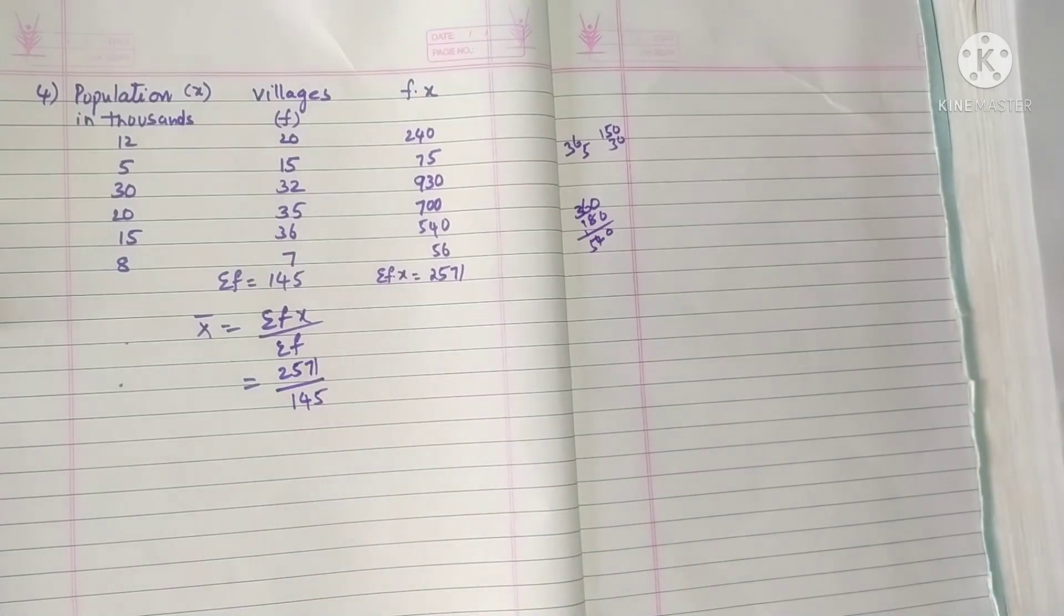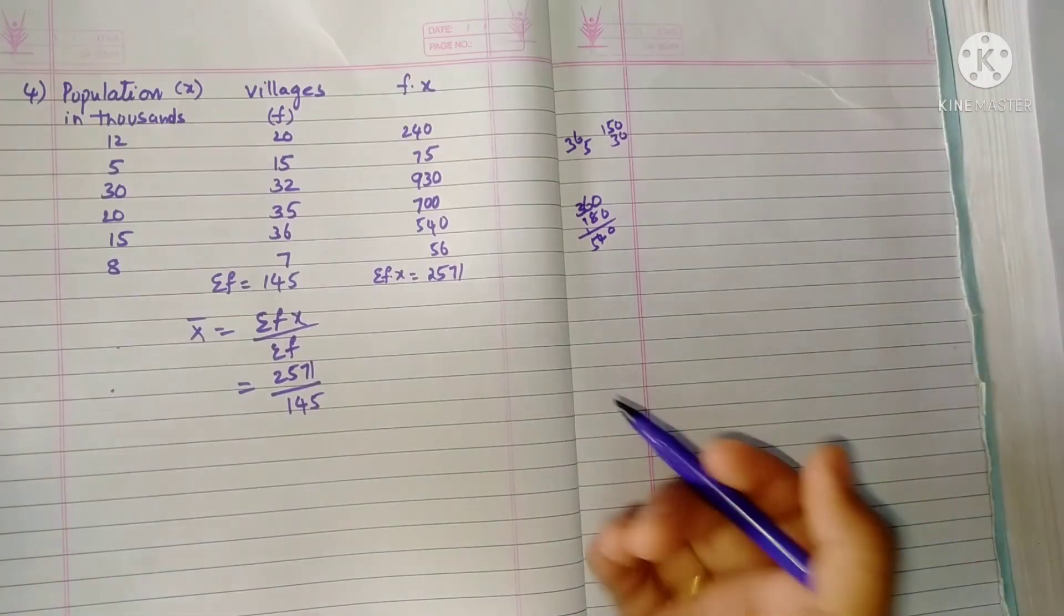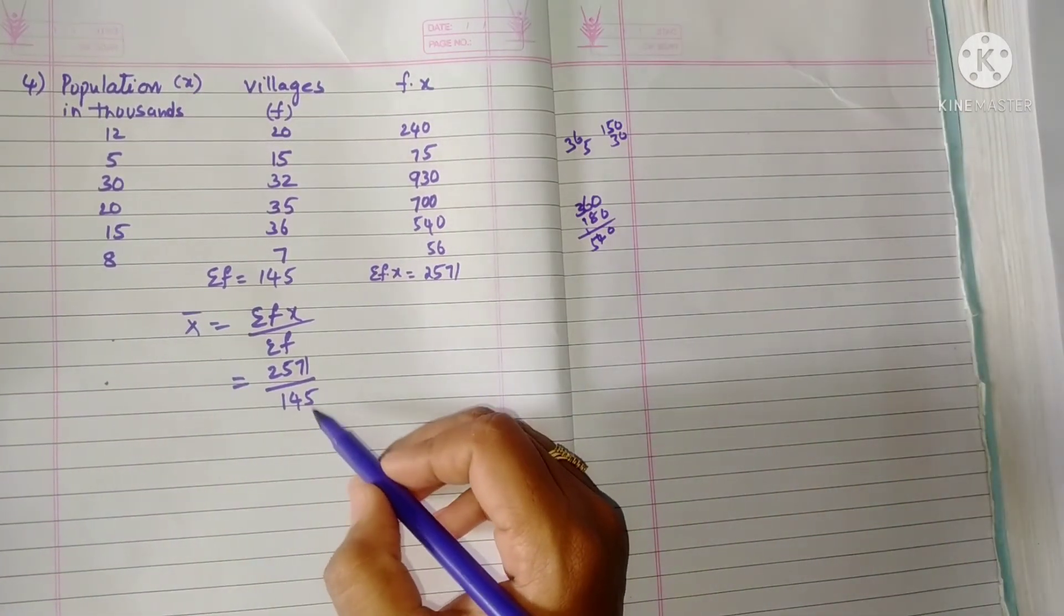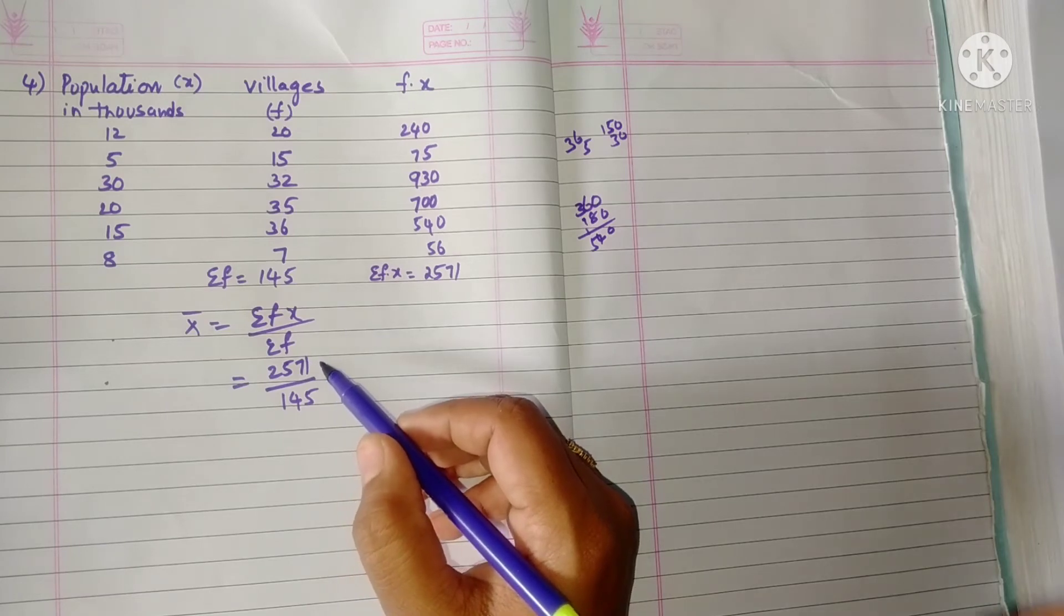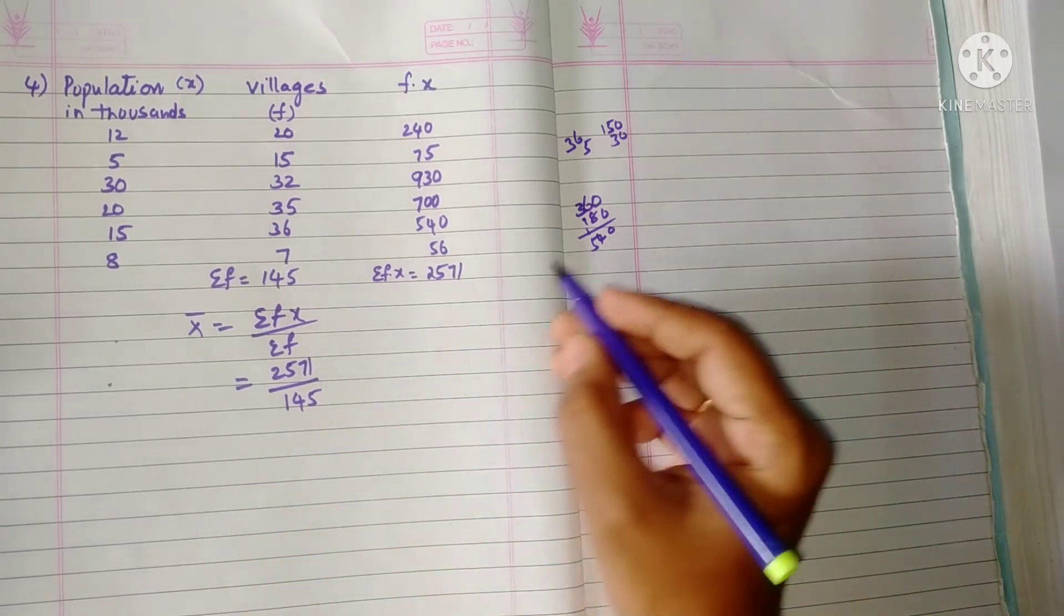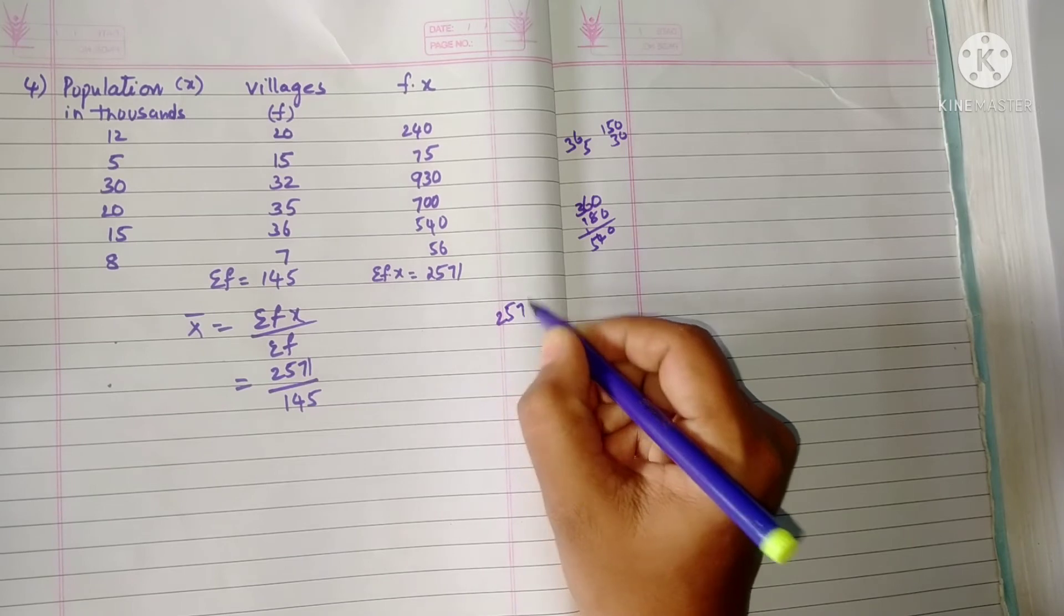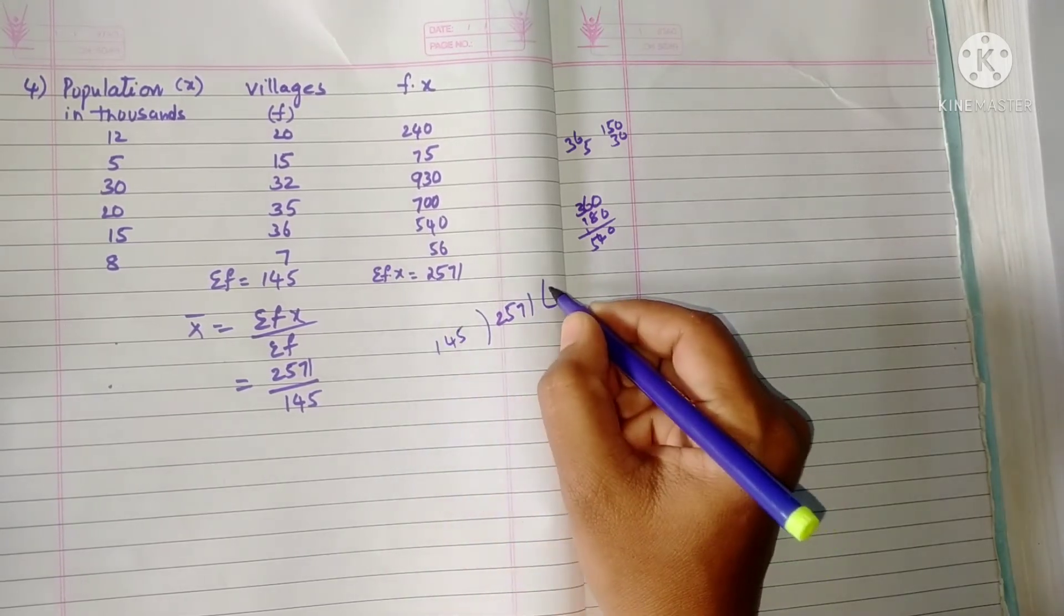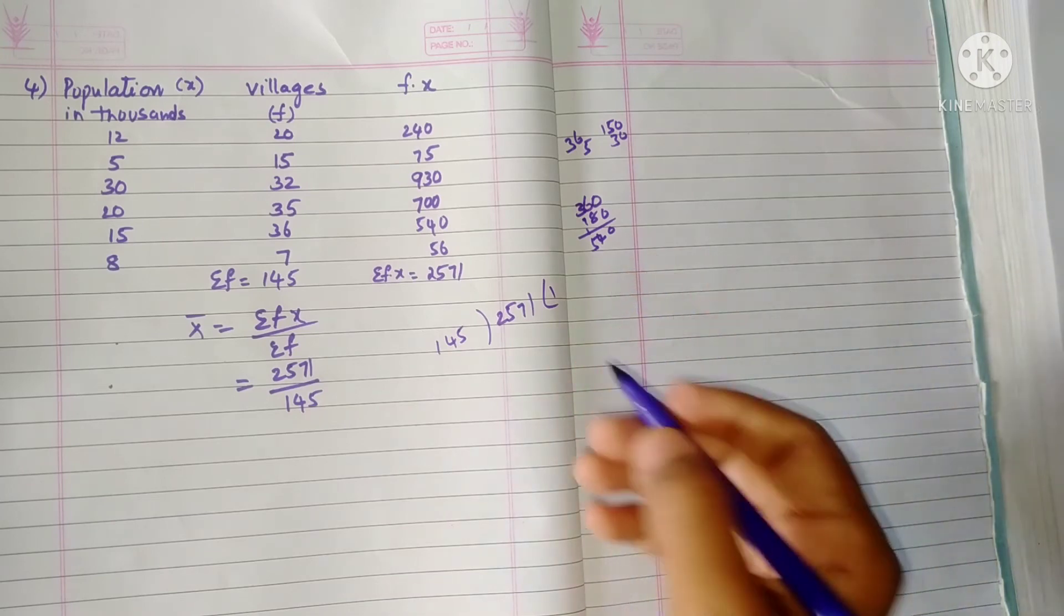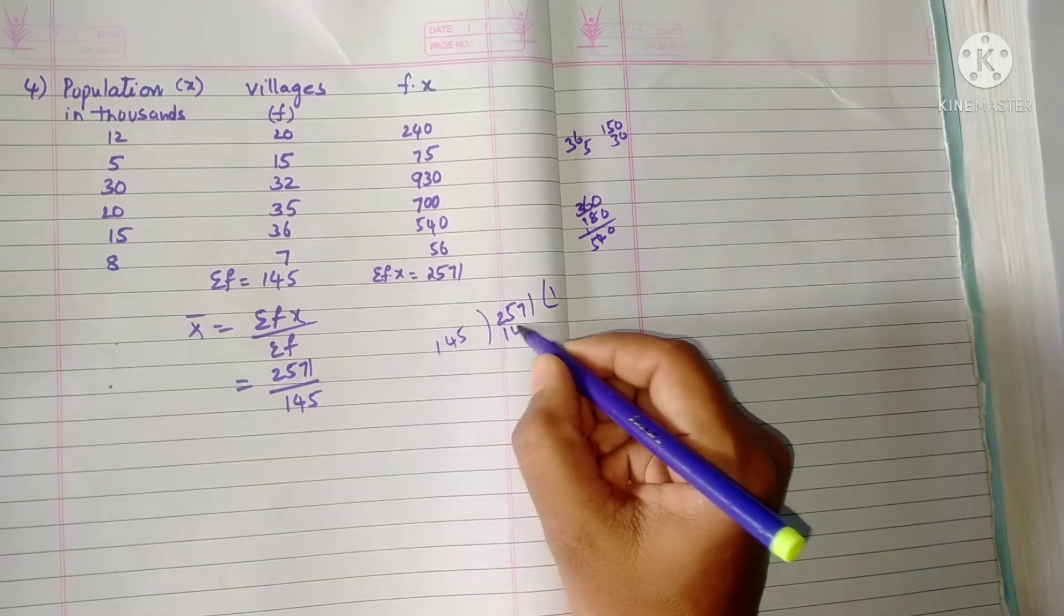So if we calculate, for cancellation here—not with 2, 3, 5, there is no cancellation—so directly we can do the division. 145 clearly. 14 twos are 28, so here only one time. It is a less number, so we can bring down this number.